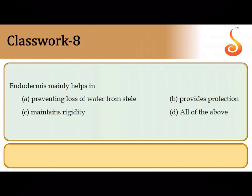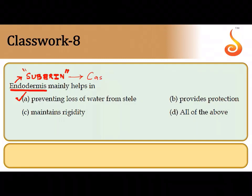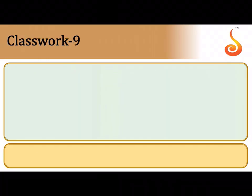Endodermis mainly helps by preventing the loss of water from the stele. The endodermis of a root has a specialized waxy coating called suberin, which does not allow water to pass through, bringing about conservation of water. The suberized thickenings in the radial and tangential walls of endodermal cells are referred to as Casparian strips — please remember these are present in the radial and tangential walls of endodermal cells.